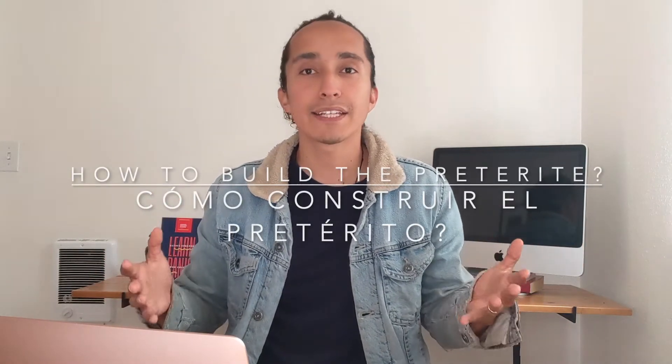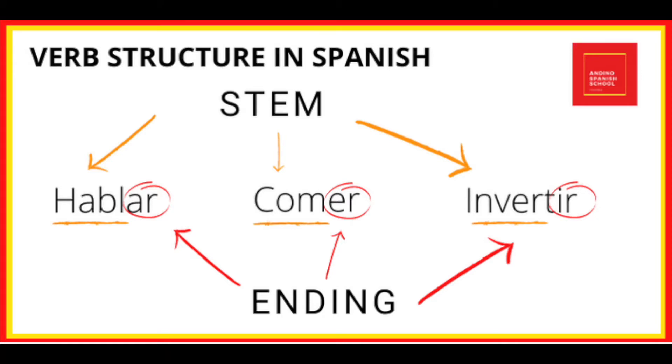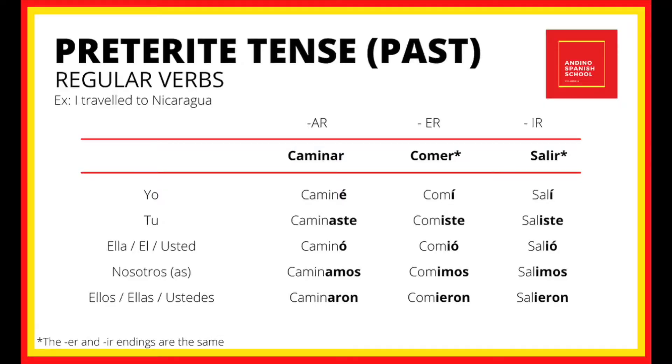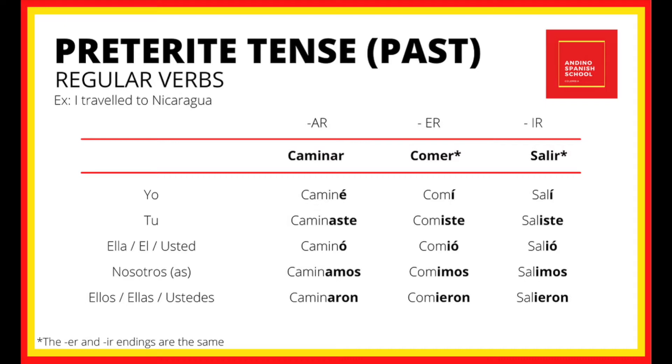How do we build sentences using the preterite in Spanish? If you remember the verb structure in Spanish, we have the stem that stays the same most of the time for regular verbs, and the ending, which is the one that we modify. We modify it to put the verb in the past. For an AR ending verb like 'caminar': yo caminé, tú caminaste, ella caminó, nosotros caminamos, y ellos caminaron.